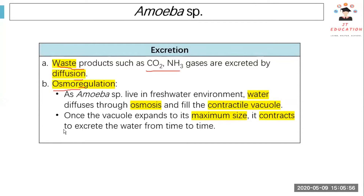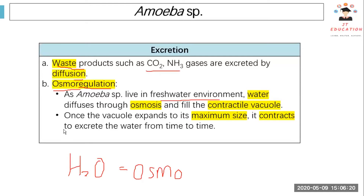Osmoregulation — where you see 'osmo,' it refers to water (H₂O). Osmoregulation means the control of water. You can normally find amoeba in freshwater environments like ponds or lakes, but not in the sea. Water diffuses through osmosis to fill the contractile vacuole.